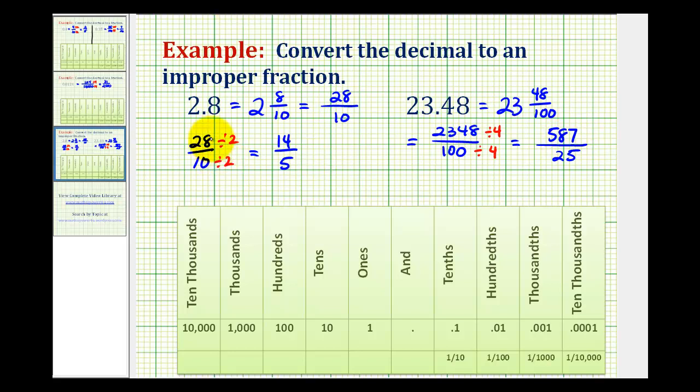So here are two examples of how to convert a decimal that's greater than 1 into an improper fraction. I hope this helps.